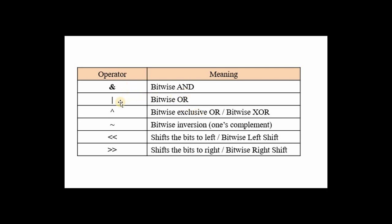The bitwise OR uses the pipe symbol '|'. For bitwise XOR, the '^' sign is at the sixth position on the keyboard — press Shift+6 to get that sign. The left shift and right shift operators use double less-than '<<' and double greater-than '>>' symbols respectively.